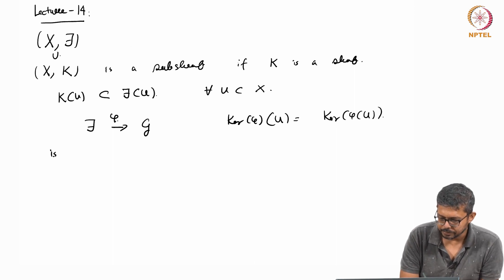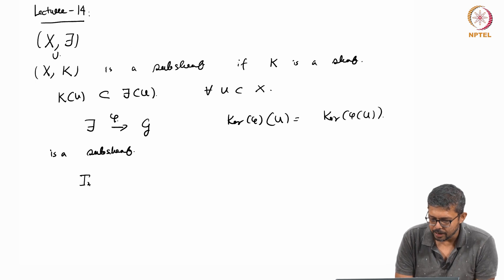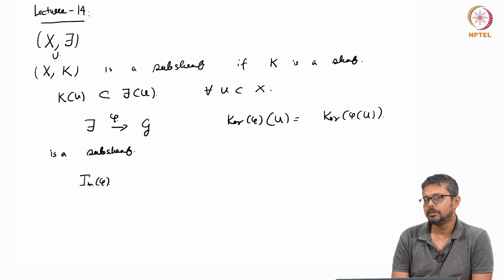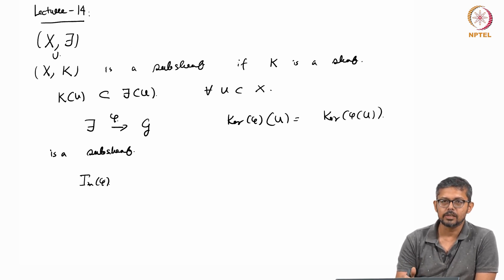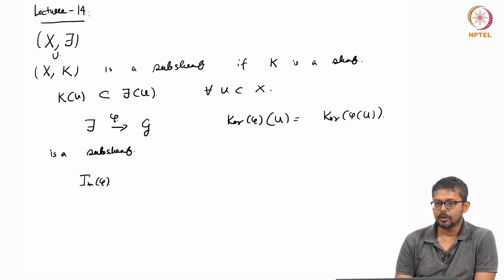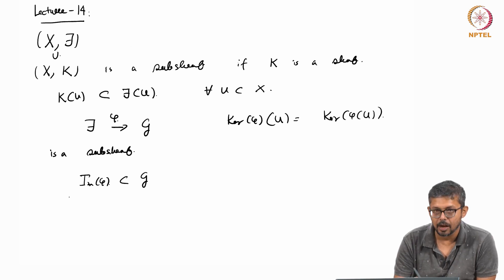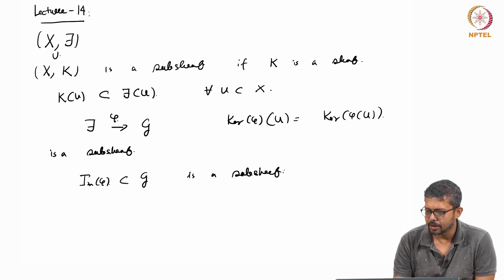Another way of getting a sub-shift is that instead of taking the kernel, you take the image. But as you know, the image is not always a shift — it is always a pre-shift. So you shiftify it. Then the shiftification of the image will be a sub-shift of g. So after shiftification, the image of phi is a sub-shift of g. These are the standard ways to get a sub-shift.